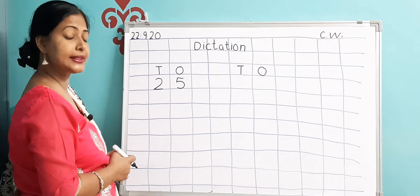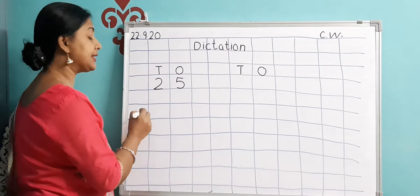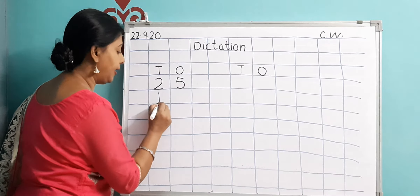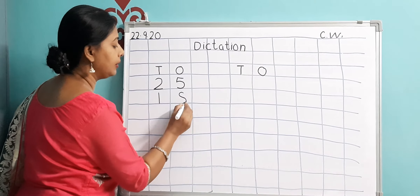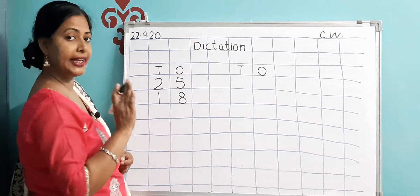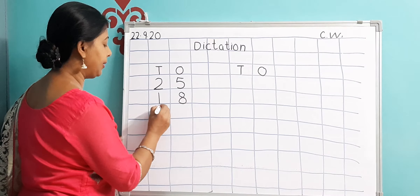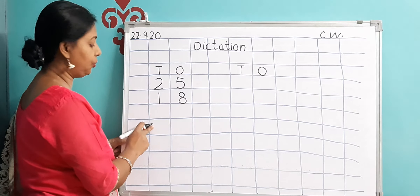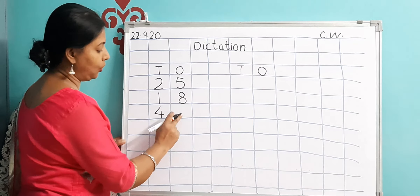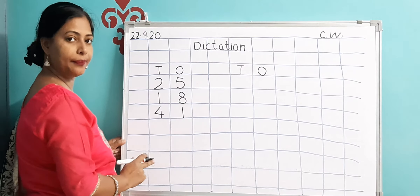Next number is 18. That means 1 and 8 — 18. So 1 will come in the Tens column and 8 will come in the Ones column. Now it is 1 8, 18. Next number is 41. So 40 will come in the Tens column and 1 in the Ones column. This is 41.